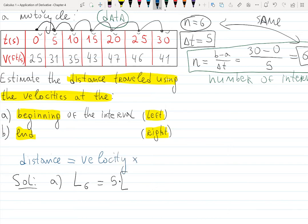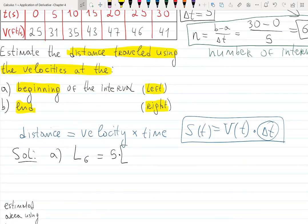So basically, s of t will be v of t times delta t. Time here is constant. The change in time is constant. v is always different. Since time is constant and it's five, I can just factor five out. Now I can add all the velocities from the table. Look at the second column.